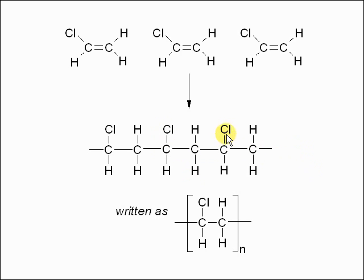Now, if I had different groups on here, then it would be a different type of plastic. If that was an H, then this would be ethene, and so we'd make a polyethene or polythene. And you could do polypropene, you could do polystyrene, and quite a few plastics just by changing what the group here is.